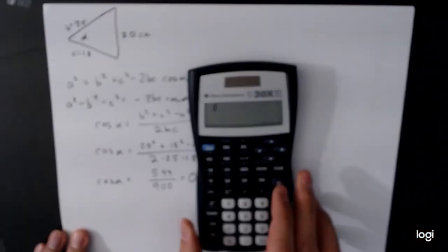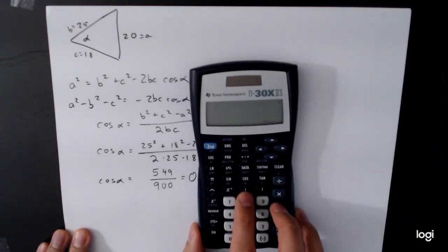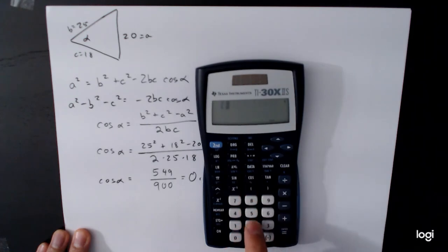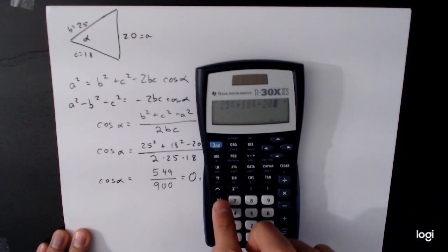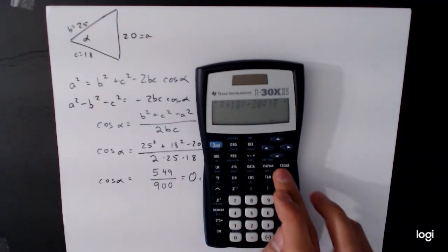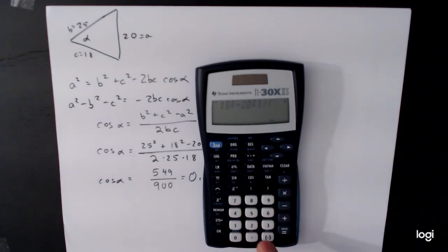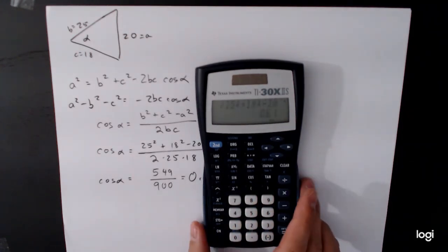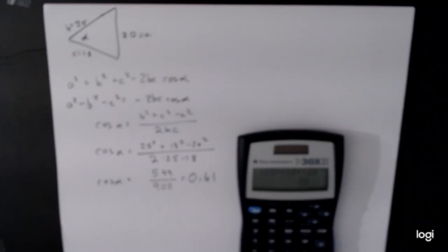Or if your calculator is fancy enough, it'll have parentheses and you can use parentheses. So parentheses, 25 squared plus 18 squared minus 20 squared, close parentheses. That way you have the numerator all in one piece, divided by open parentheses, 2 times 25 times 18, 0.61, which is the same value as we got before.